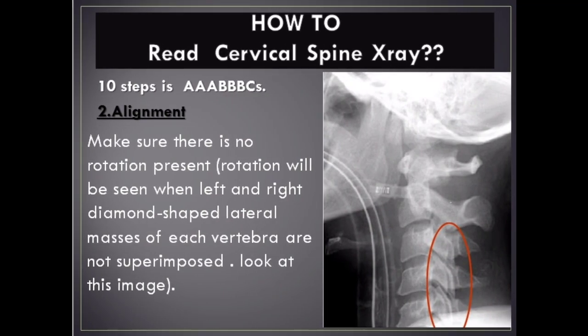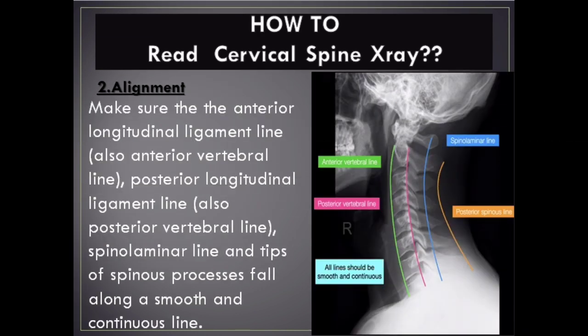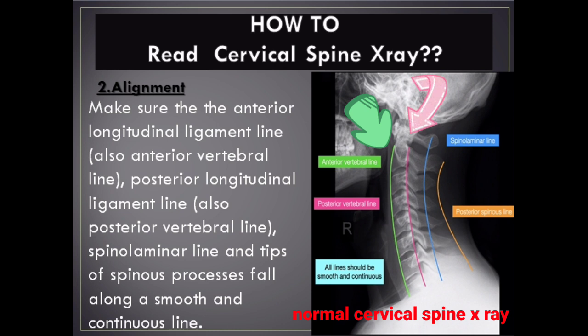Step 2 – Alignment: Make sure there is no rotation present. Rotation will be seen when the left and right diamond-shaped lateral masses of each vertebra are not superimposed. Make sure that the anterior longitudinal ligament line, posterior longitudinal ligament line, spinolaminar line, and tips of spinous processes all fall along a smooth and continuous line.